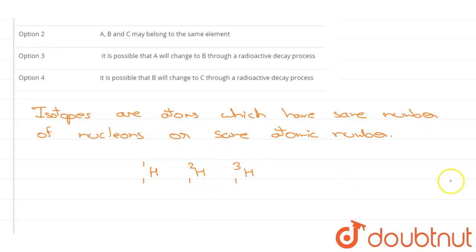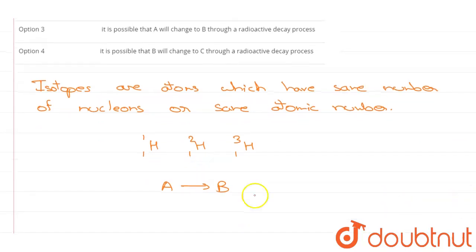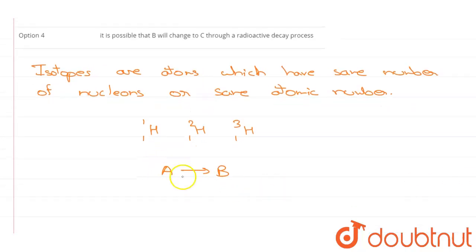So if A and B are isotopes, that means they are the same element, but they have different number of nucleons. So we can conclude that A and B will be same element.